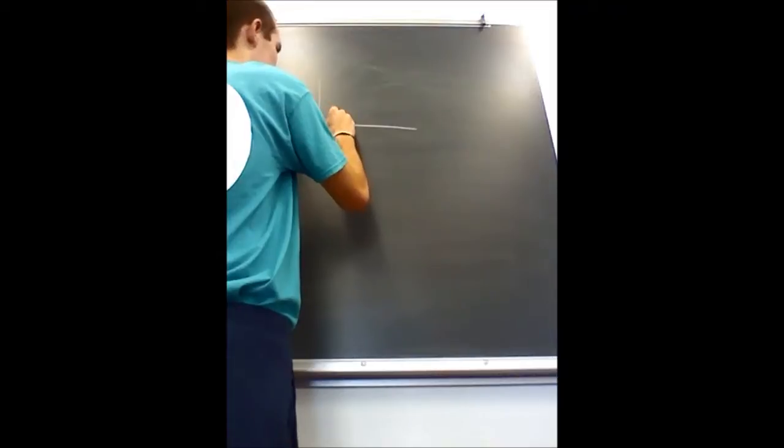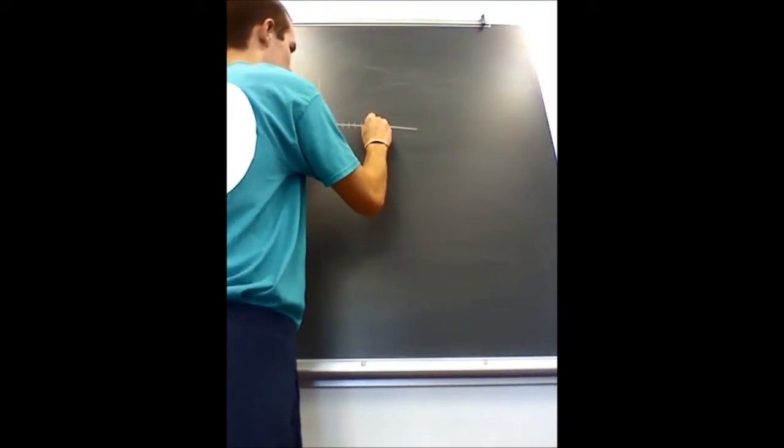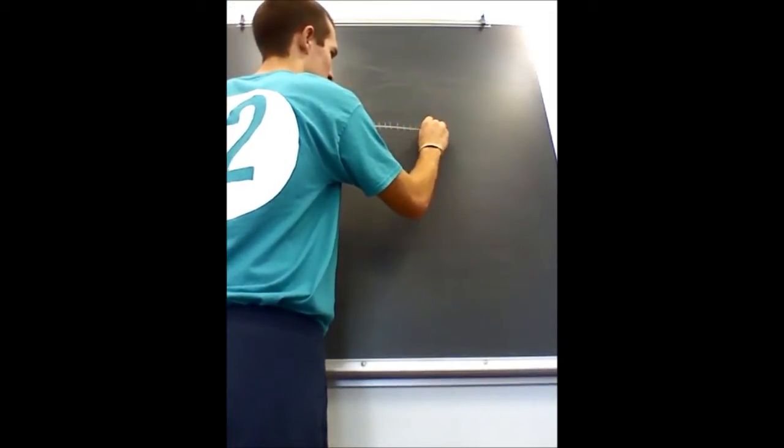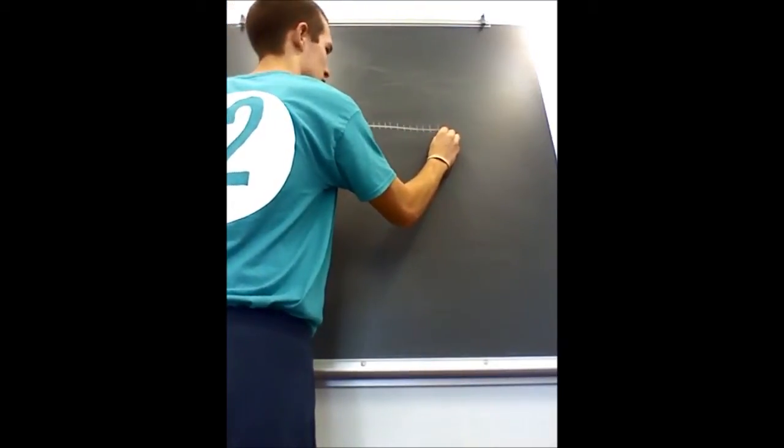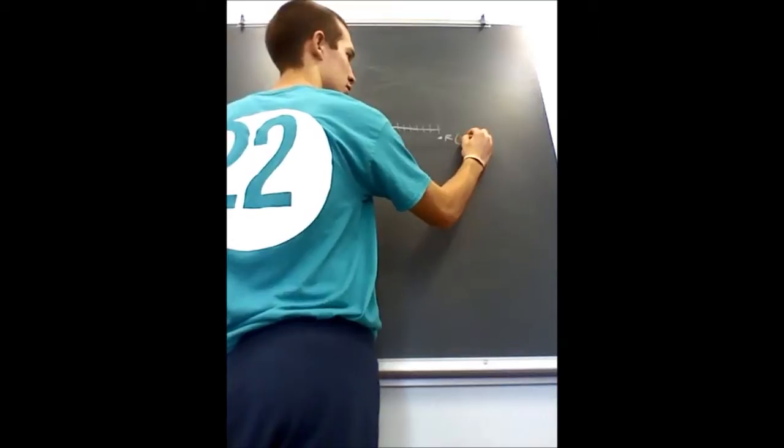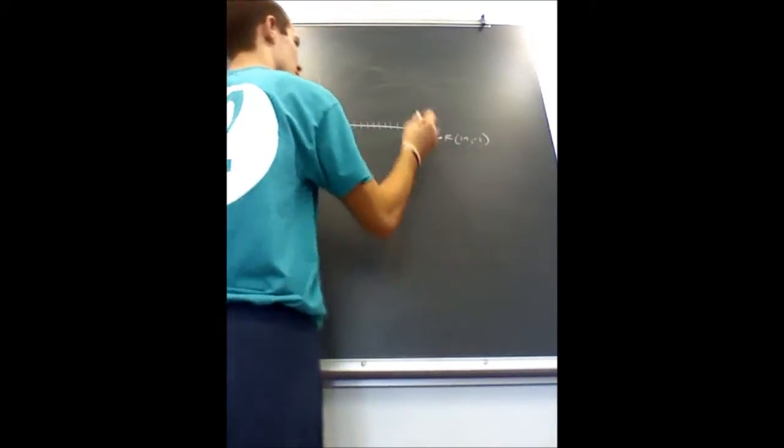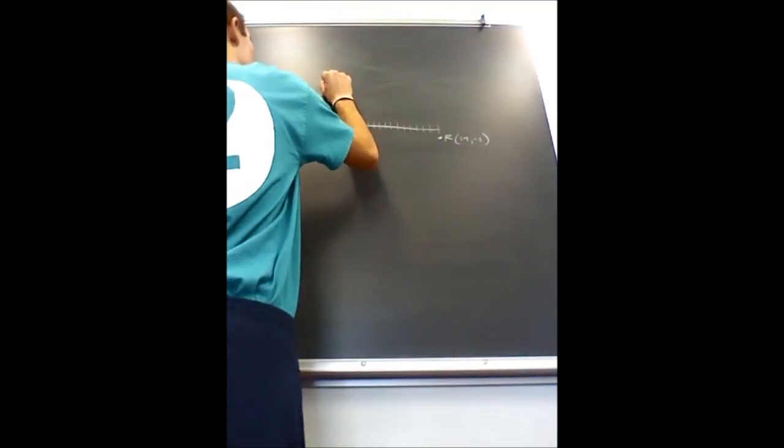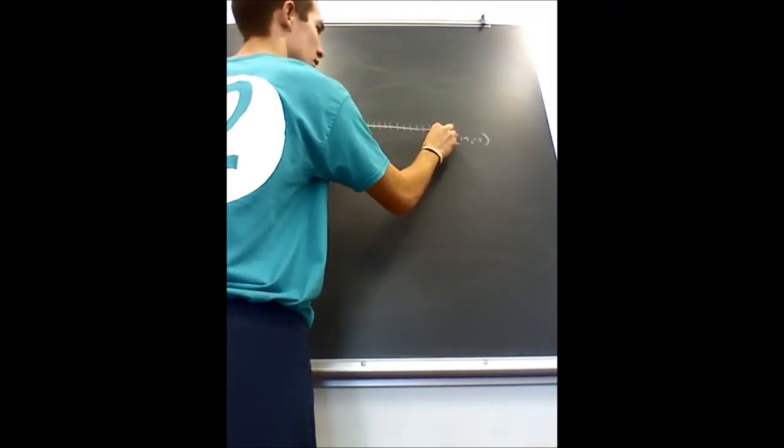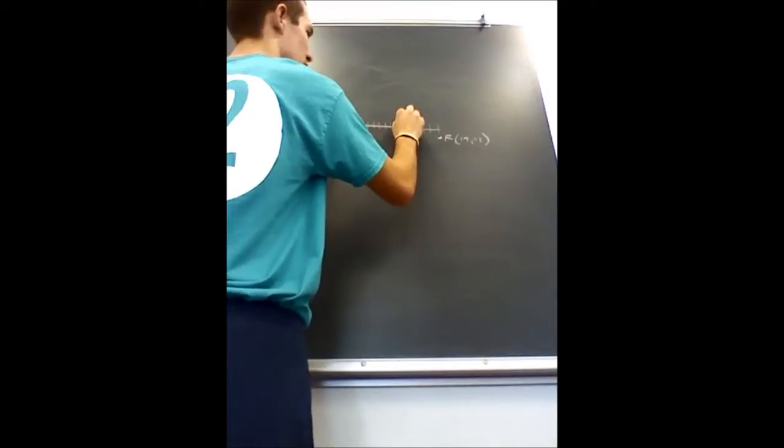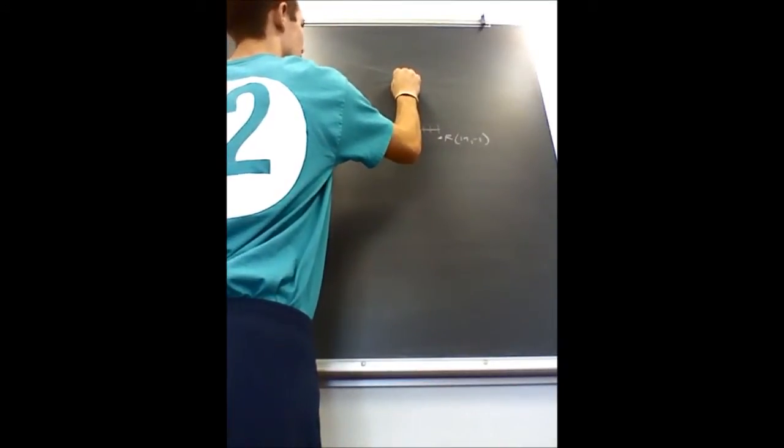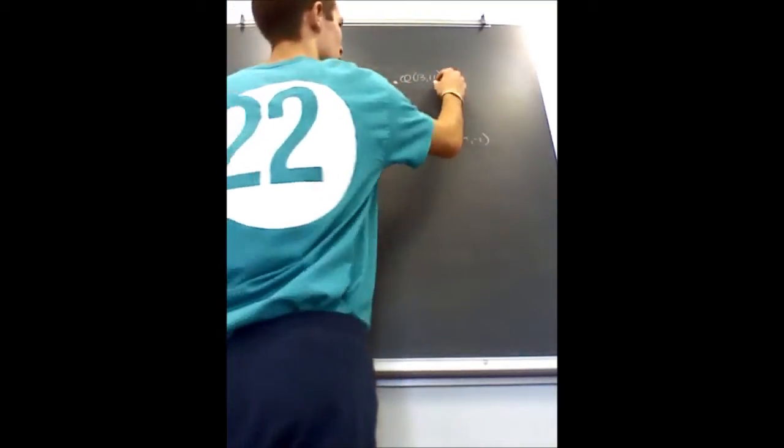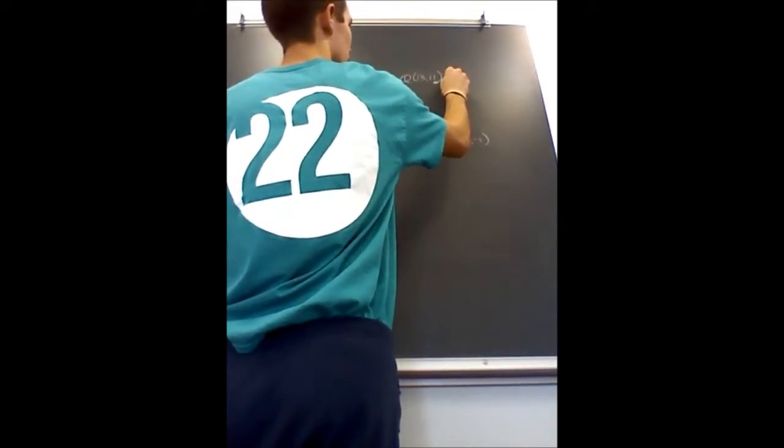At 19, negative 1 we have R, and at 13, 11 we have point Q, and at 19, 11 is point S.